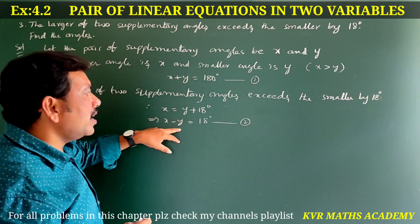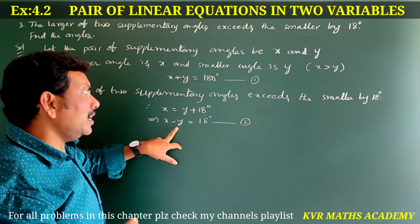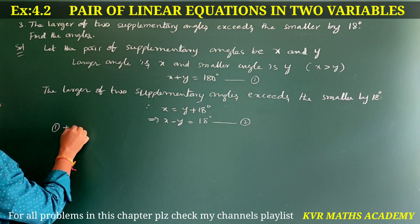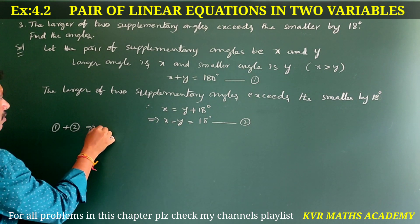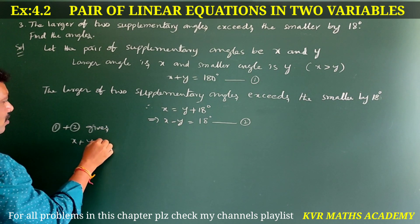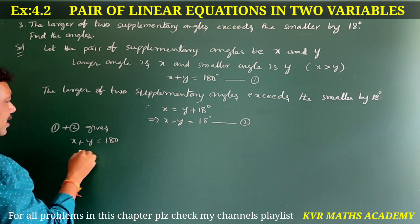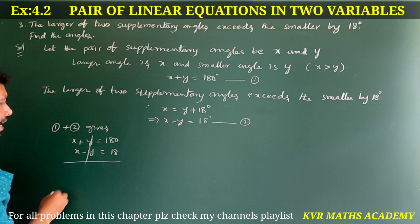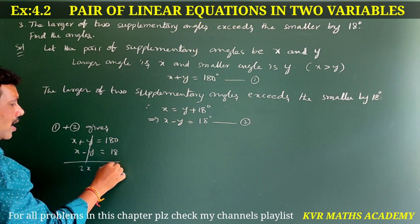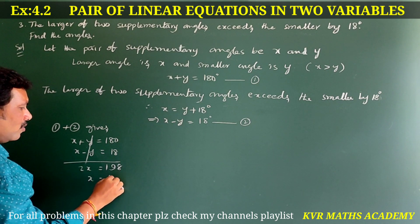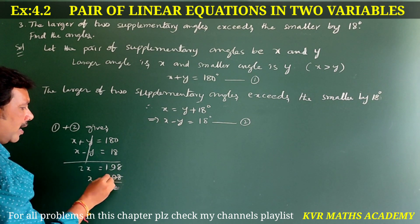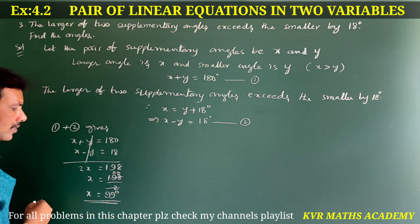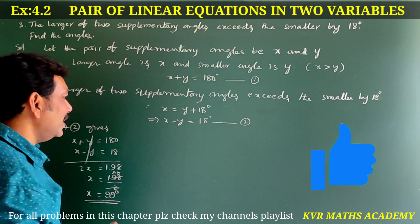Let us solve equations one and two. Since we have plus y and minus y, we add both equations. Adding gives 2x equals 180 plus 18, which is 198. Therefore x is equal to 198 divided by 2, which gives x equal to 99 degrees.